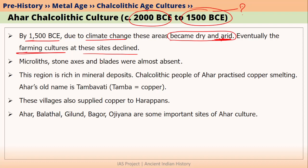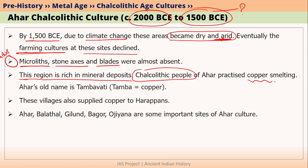These sites in Ahar Chalcolithic culture declined. One peculiar feature is that we did not find many stone tools here — for example, no microliths, stone axes, or blades. However, Ahar Chalcolithic culture had copper deposits nearby, so these people made different kinds of copper tools and implements. We can say that Ahar Chalcolithic people practiced copper smelting on a wide scale. That is why the old name of Ahar was Tambavati — 'Tamba' in Hindi means copper.